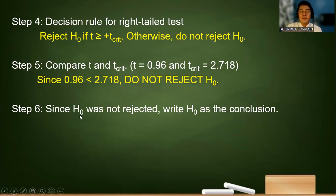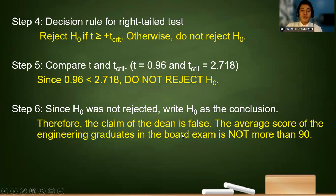Since H₀ was not rejected, therefore we will use the null hypothesis as the conclusion. Therefore, the claim of the dean is false. The average score of the engineering graduates in the board exam is not more than 90. So we have disproved the claim of the dean.